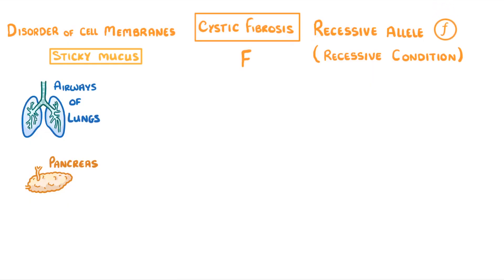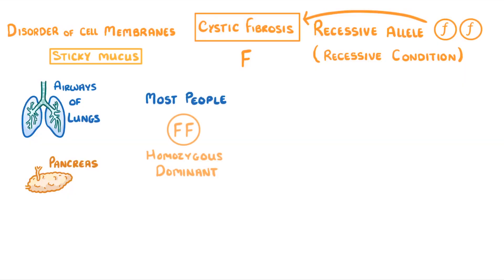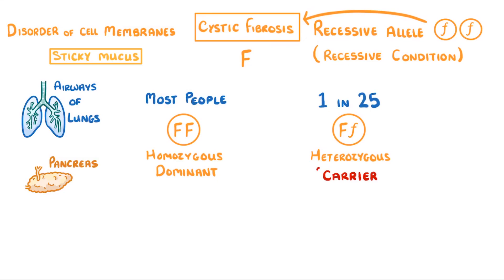If we use the letter F, then the lowercase f will be the recessive allele that can cause cystic fibrosis. But because it's recessive, you'd need two of them to actually have the condition. Although most people have the normal homozygous dominant genotype, one in 25 people are heterozygous. We call these people carriers because they don't actually have the condition themselves, but they do carry one copy of the cystic fibrosis allele and so could potentially pass it on to their children.